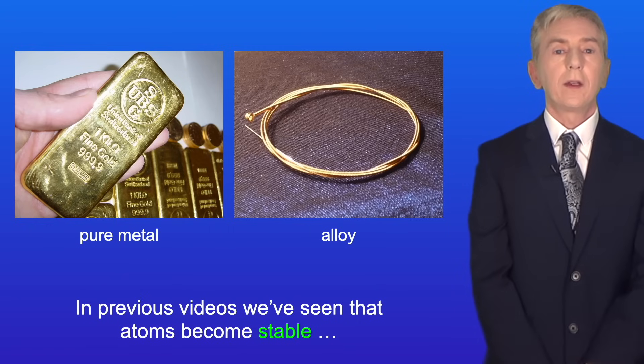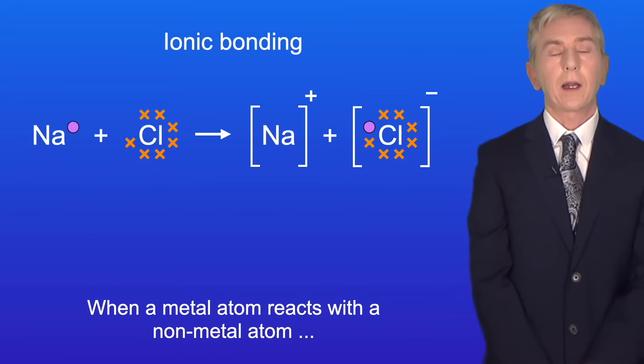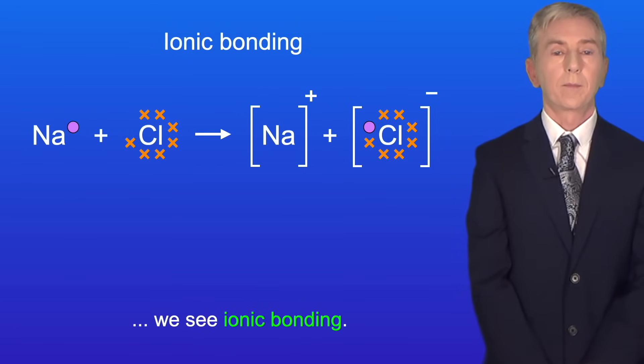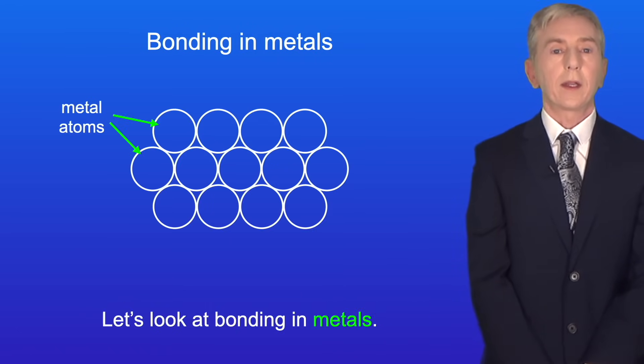In previous videos we've seen that atoms become stable by achieving a full outer energy level. When a metal atom reacts with a non-metal atom we see ionic bonding and when two non-metal atoms react we see covalent bonding. So let's look at bonding in metals.